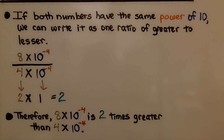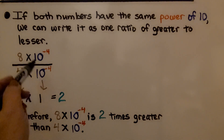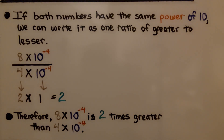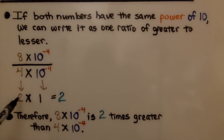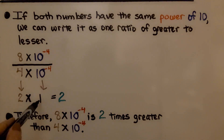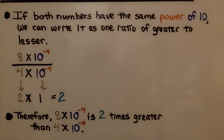If both numbers have the same power of 10, we can write it as one ratio of greater to lesser. We do 8 divided by 4, which is 2. We have the same numerator and denominator on the powers of 10 side, so it's going to be times 1, which is equal to 2. Therefore, 8 times 10 raised to the negative 4th power is 2 times greater than 4 times 10 raised to the negative 4th power.